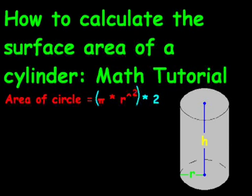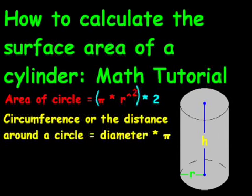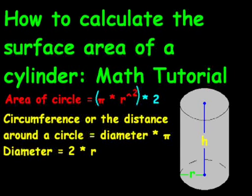Now we want to know the area around the outside. And the circumference, or the distance around the circle, is going to be the diameter times π. Now, diameter is going to equal 2 times the radius, or 2r, which we have the green r there.